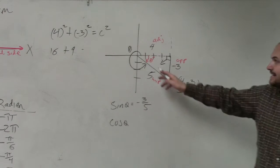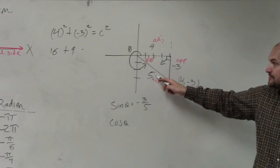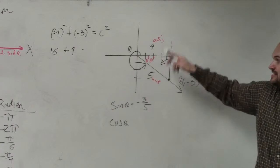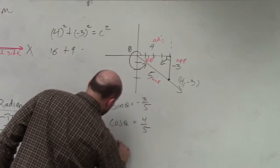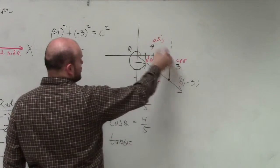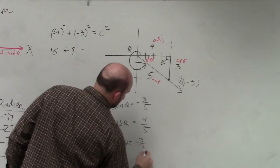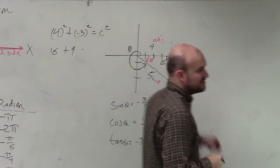So now sine is opposite over hypotenuse. Cosine of theta is adjacent over hypotenuse, 4 over 5. And tangent of theta is opposite over hypotenuse, negative 3 over 5. Opposite over adjacent, sorry.